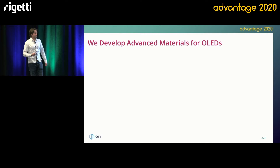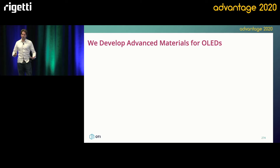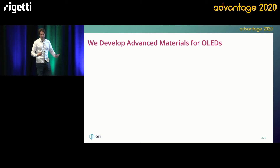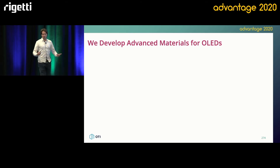First and foremost, I should talk about what is OTI Lumionics, because we're a bit of a different company than most of the other quantum computing companies around here. We don't necessarily make sense as one of the ideal partners for a quantum computing company, but one of the things that we have strength in is that we actually make chemicals.